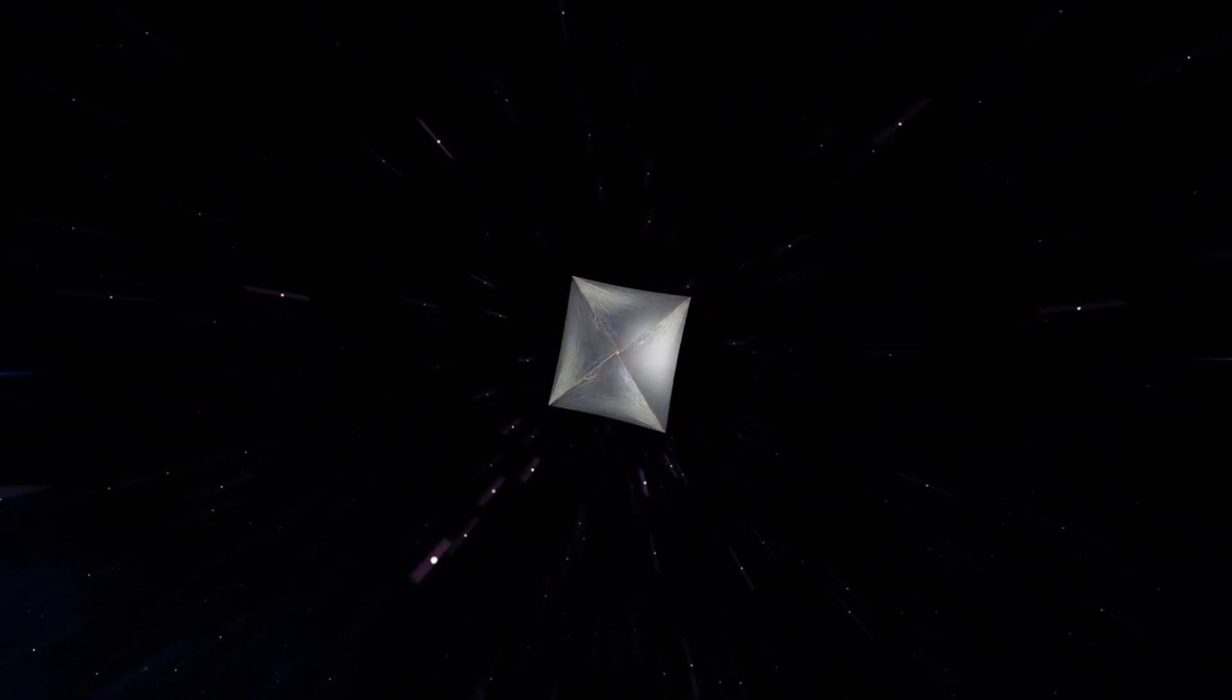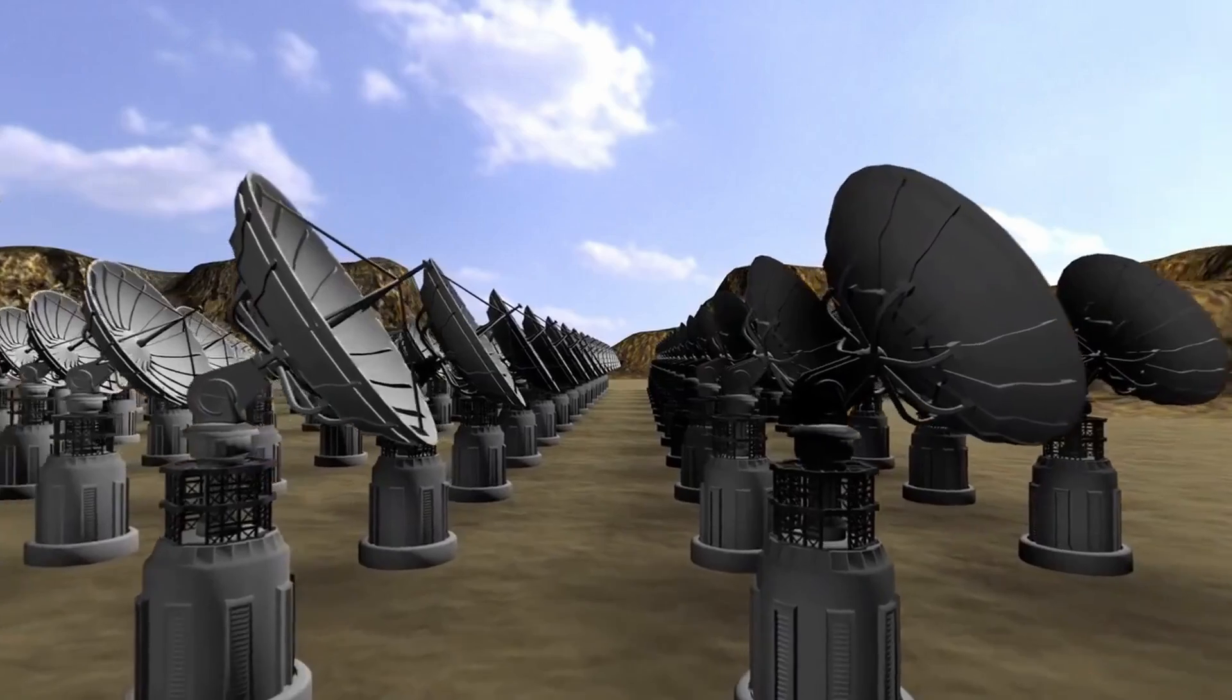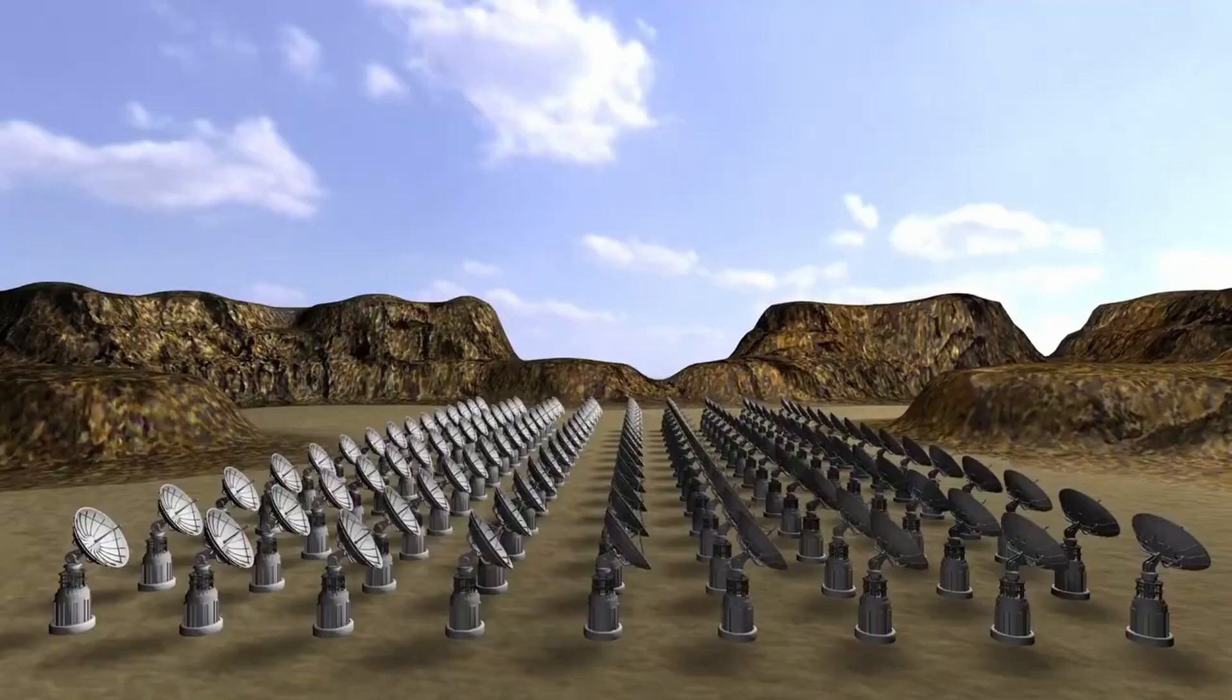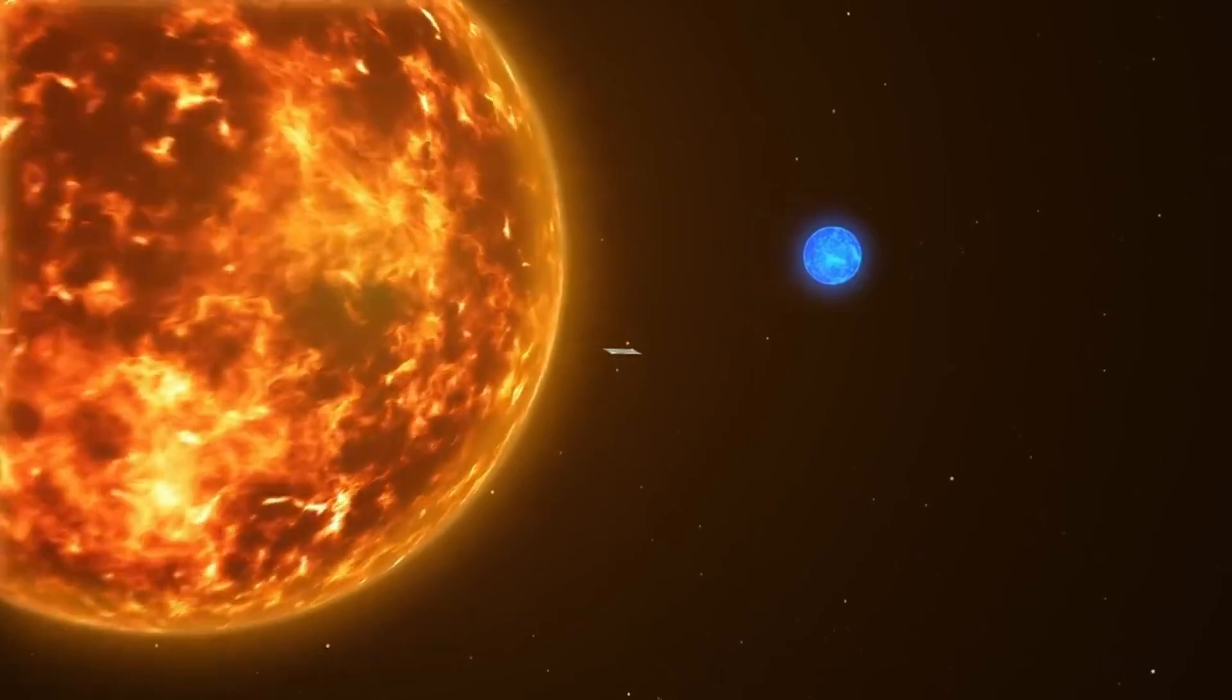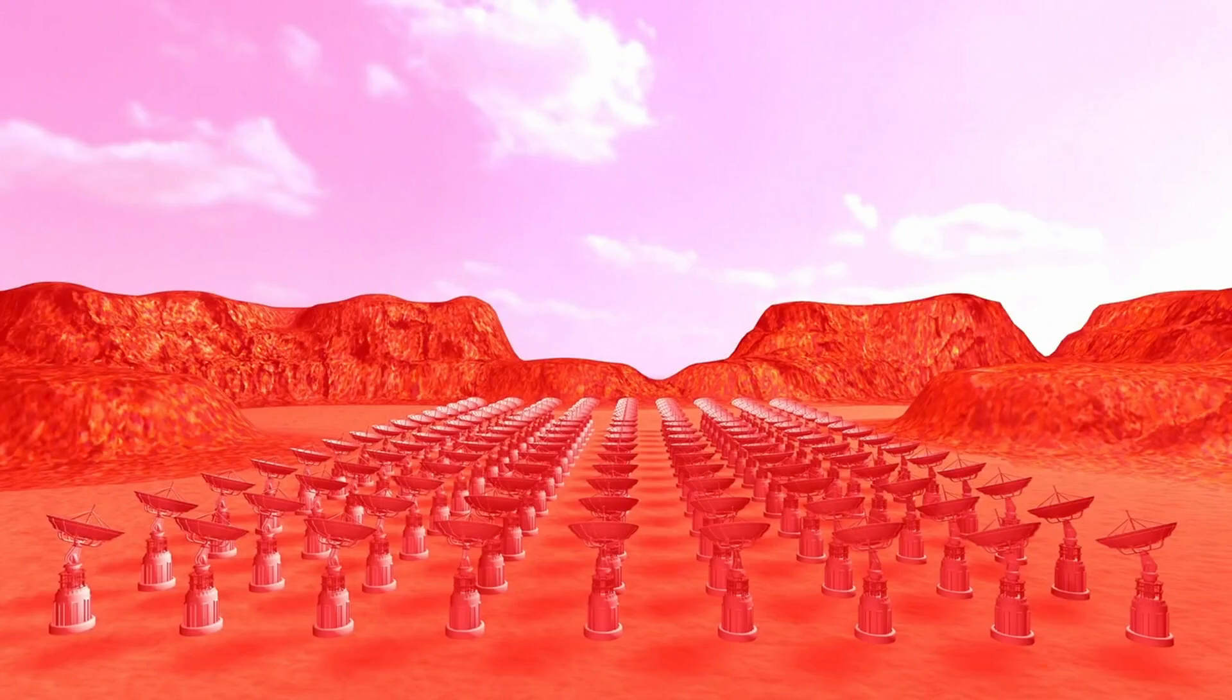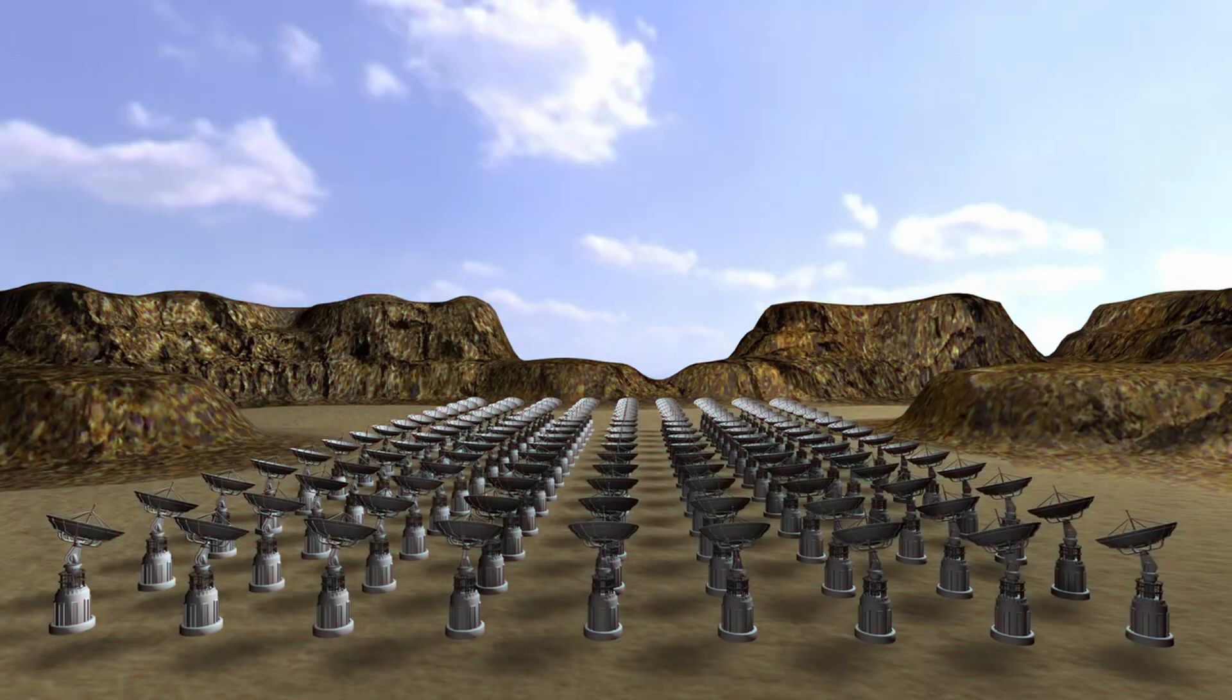Also in 2017, the Breakthrough Listen project made headlines when it detected a strange signal emanating from Proxima Centauri. The signal, known as BLC-1, was unlike anything else encountered by the project. While the origin of the signal is unknown, its discovery has piqued the scientific community's interest in the search for extraterrestrial intelligence.